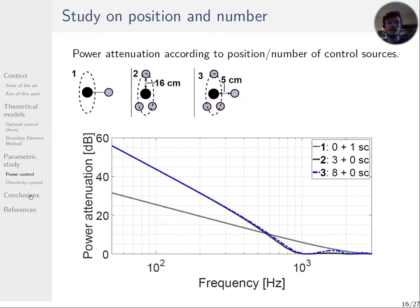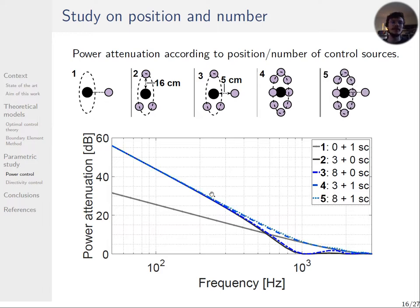The case 3 is like case 2. There is not any improvement except a little increase in high frequency. The case 4 is a combination of the two layers of control sources that allow a control in a wider frequency range until 6 dB of power attenuation at 1 kHz. Finally, putting two layers of sources with eight sources on the ring instead of three shows a small improvement.